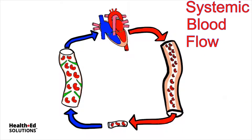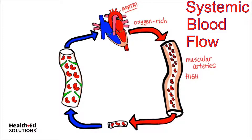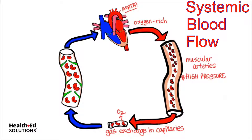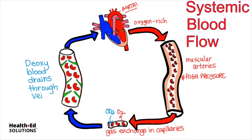Here is a nice summary of how oxygen-rich blood exits the left side of the heart via the aorta, travels through muscular arteries that are very, very high pressure, and then participates in gas exchange in the capillaries. That means oxygen will leave the blood and go into the tissues along with nutrients, hormones, etc.